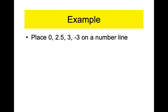Let me show you an example. You'll be asked to place a certain number of numbers on a number line. Step number one: draw a number line with arrows. Step number two: before you put any tick marks, figure out what's the biggest and smallest number. If the biggest and smallest are decimals, pick one bigger and one smaller as whole numbers or integers. If 2.5 was the biggest number, I'd probably pick three. We're lucky here that three and negative three are the largest and smallest, and they're all integers.